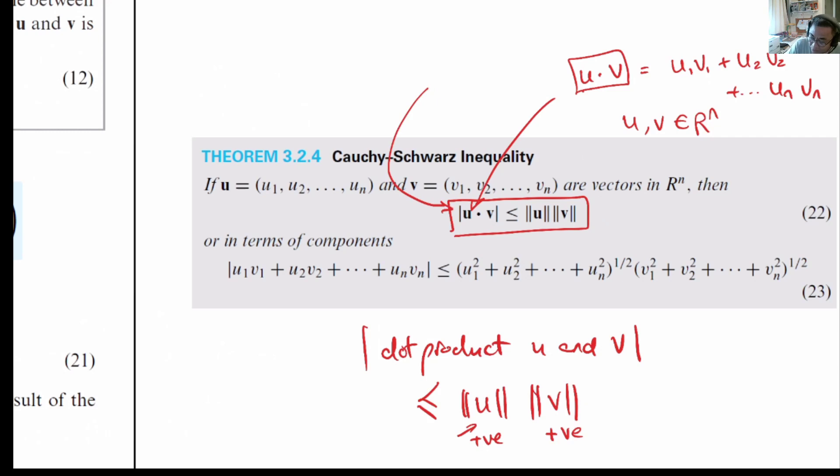Regardless, we are going to take the absolute value of u dot v and what we say is that the absolute values of u dot v is always less than or equal to norm of u, norm of v. This is the Cauchy-Schwarz inequality.